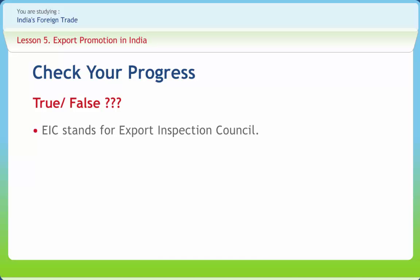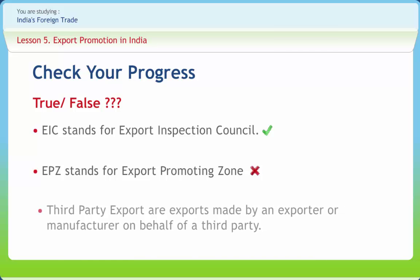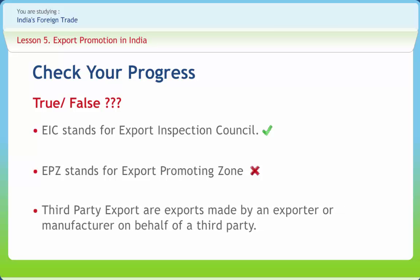Quick comprehension check: EIC stands for Export Inspection Council — correct. EPZ stands for Export Promoting Zone — this is wrong; EPZ stands for Export Processing Zone. Third-party exports are exports made by an exporter or manufacturer on behalf of a third party — correct.